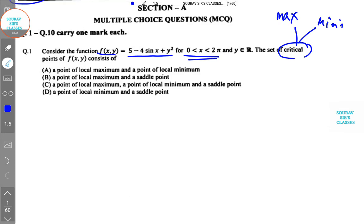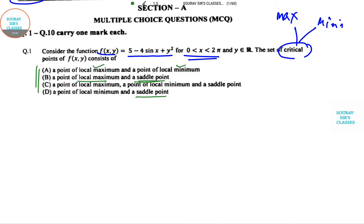The four options include local maxima, local minima, and saddle points. They haven't given point of inflection, which is the point at which curvature changes, so we likely don't have that here. Now let's solve the question.